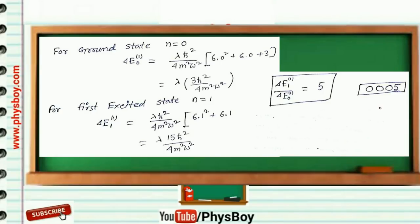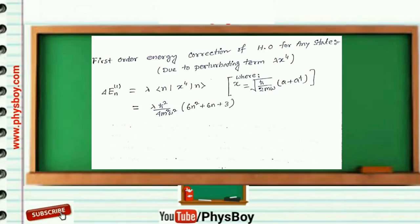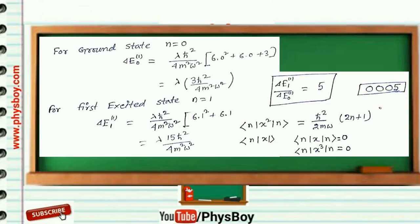Now some tips and tricks for upcoming examinations. If the perturbing term contains x to the power 4, you can calculate the first-order energy correction of any state — ground state, first excited state, second excited state, and so on — by using this formula, just putting the value of n. If the perturbing term contains x, x cubed, or any odd power of x, then the energy correction of any state will be zero.